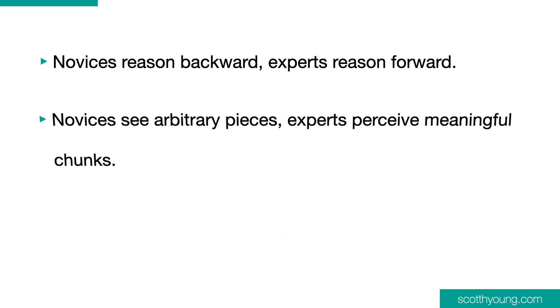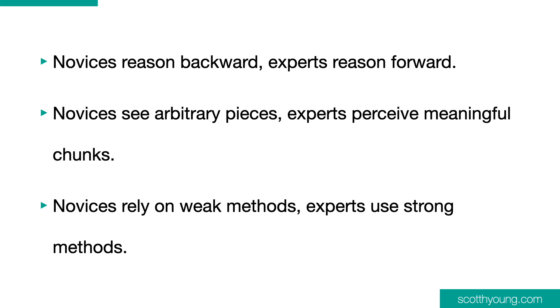Number two: novices see arbitrary pieces, experts perceive meaningful chunks. Experts see complex patterns of information that allow them to reconstruct what they've seen without difficulty. Novices, instead, see a bewildering array of component parts that they struggle to make sense of. Number three: novices rely on weak methods, experts use strong methods. Weak methods are general-purpose tools used in novel situations, including heuristics like hill climbing and trial and error. Strong methods are domain-specific methods that deal with particular problems. While a host of expert-novice differences have been studied, we know comparatively less about how novices become experts.